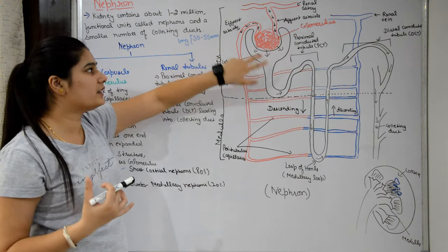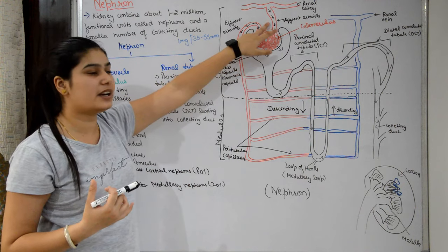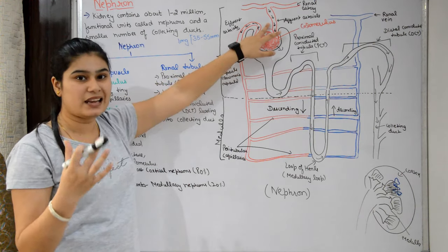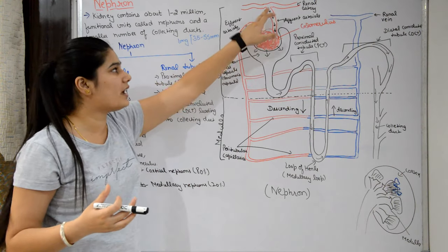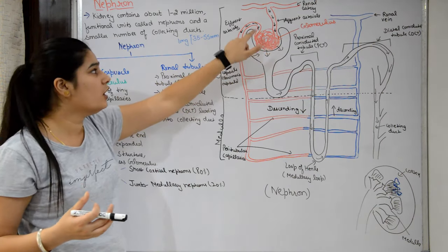To remember: afferent starts with 'A', which comes first, so afferent arterioles bring blood into the glomerulus.